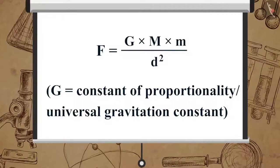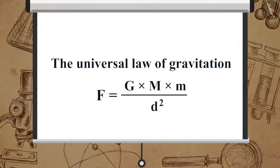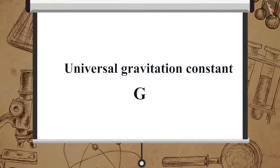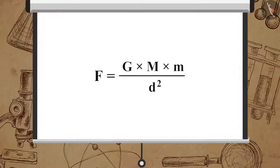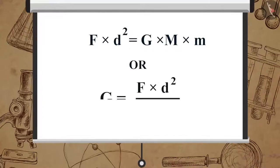G is the constant of proportionality, or universal gravitation constant. From the equation, we can derive G = F × D² / (M × M). The SI unit of G is Newton meter square per kilogram square. The value of universal gravitation constant G was calculated by Henry Cavendish using a sensitive balance.